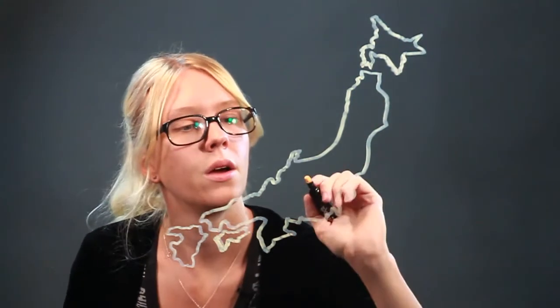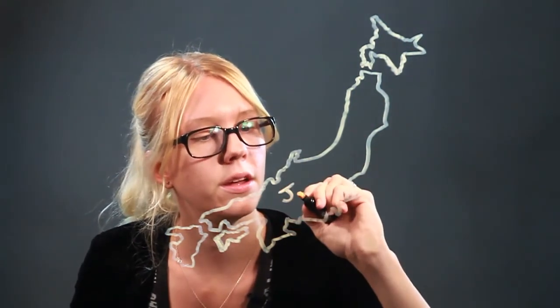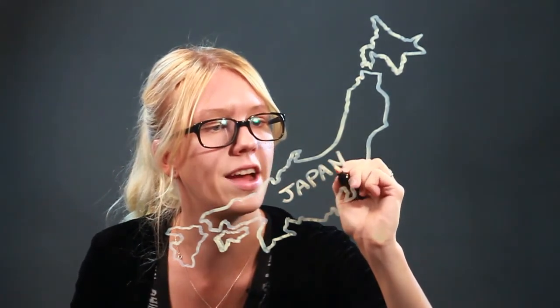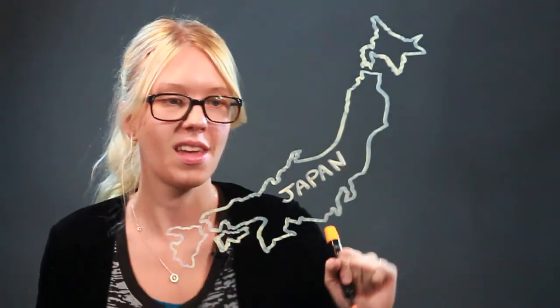There we go, that's the basic shapes. I'm going to finish it off like a normal map would by writing Japan right down the main island. And there we go.